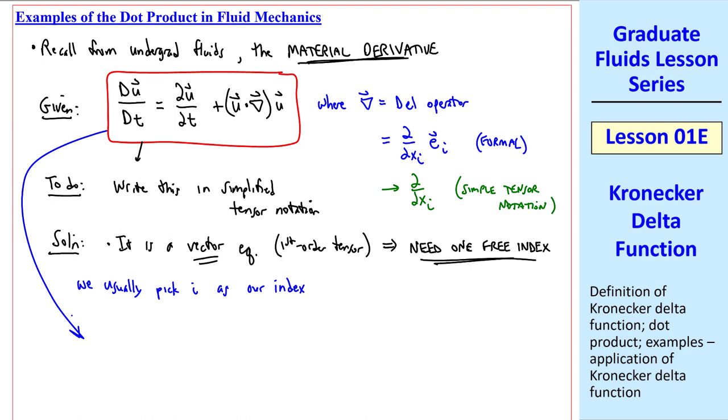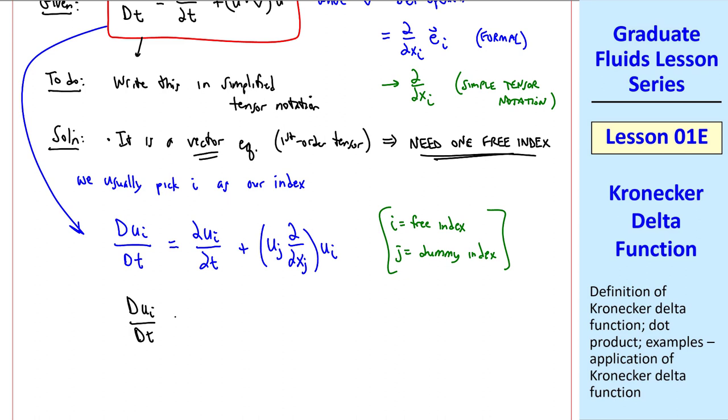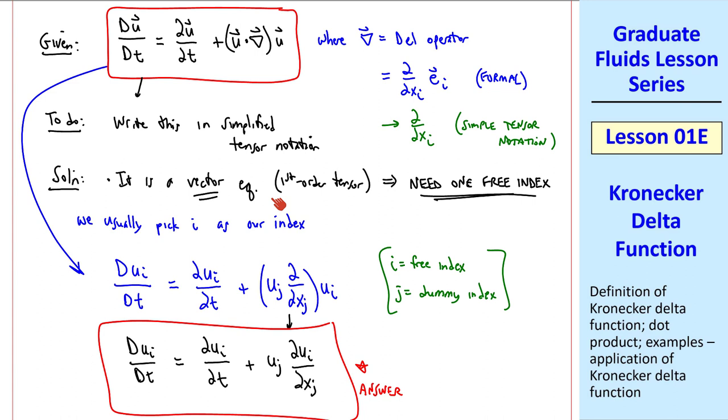First of all, recognize that it's a vector equation. You may recall that this is the left-hand side of our incompressible Navier-Stokes equation, which is a vector equation, which is also a first-order tensor. So in tensor notation, we need one free index. We usually pick i as our index. So how do we write this expression? I would write it as dui dt equal del ui del t plus the dot product of u and del operating on u. This u is the one that must have the i index. This dot product will have a dummy index j. So it's uj del ui del xj. This is our answer.